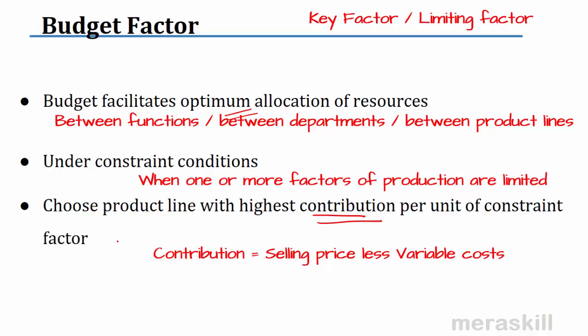What is contribution? Contribution is selling price minus variable cost — costs that vary with the number of units produced. For example, to make one unit I need one pound, to make 10 units I need 10 pounds, to make 20 units I need 20 pounds. So material costs are variable costs. Contribution is selling price less the summation of all variable costs.